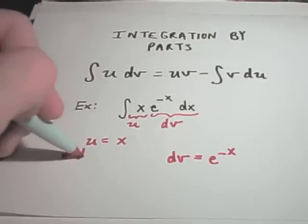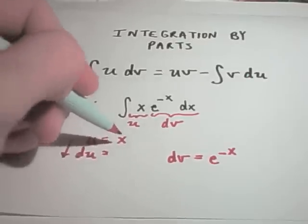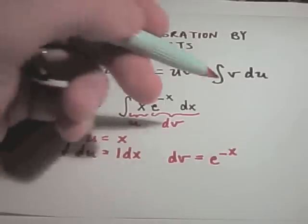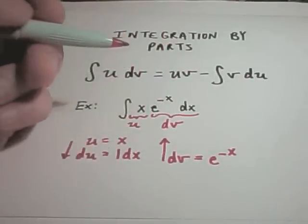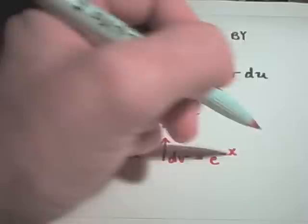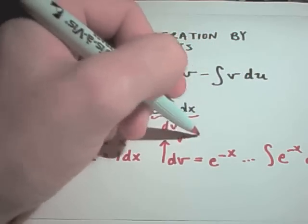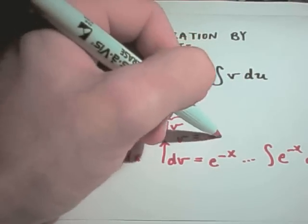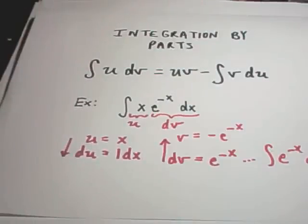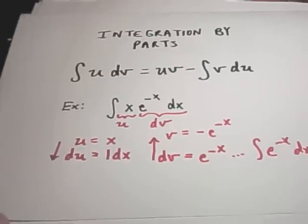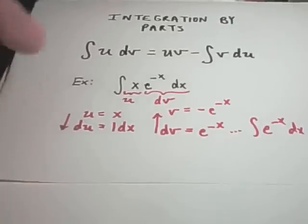To get du, you simply take the derivative of the u piece, and we'll get one dx. To get to the v piece, you actually have to integrate. Kind of off to the side, we have to integrate e to the negative x, and you can check my arithmetic here. You should get negative e to the negative x when you integrate that. Now I'm going to use all of this stuff, this u du v dv, and I'm going to fill in the right-hand side of this equal sign.